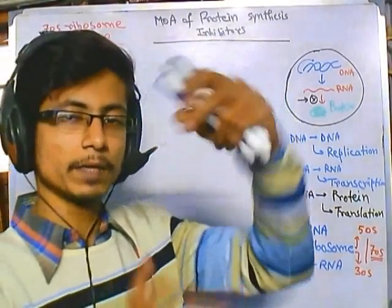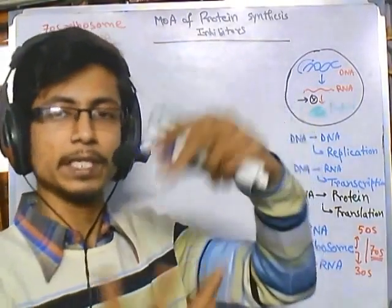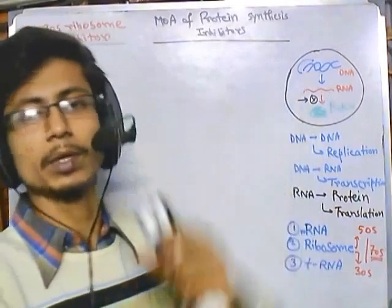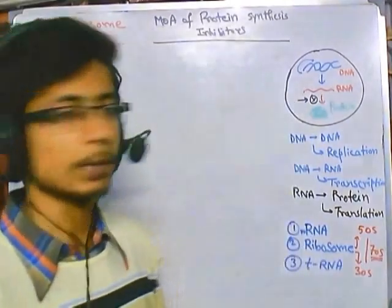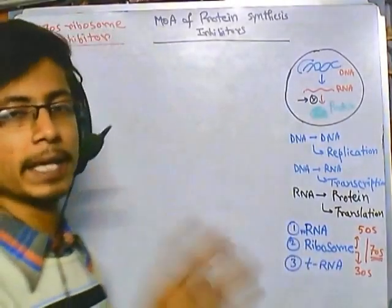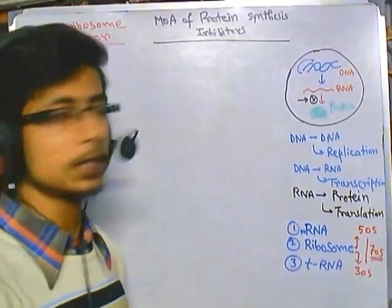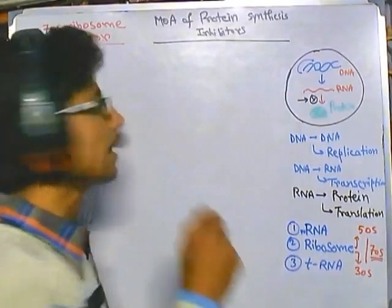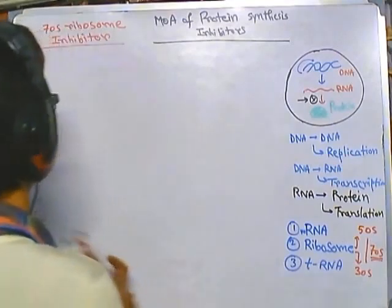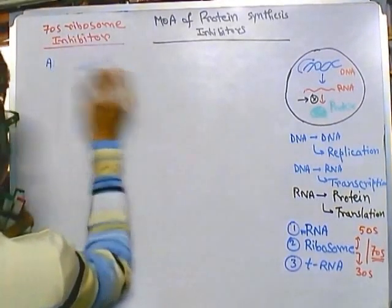70S ribosome is not a subunit — it is a compiled version of the ribosome, having 50S and 30S together. When arranged together we call it a 70S ribosome. This whole ribosome assembly can be halted or prevented by the 70S ribosome inhibitors, and the example of those inhibitors are aminoglycosides.